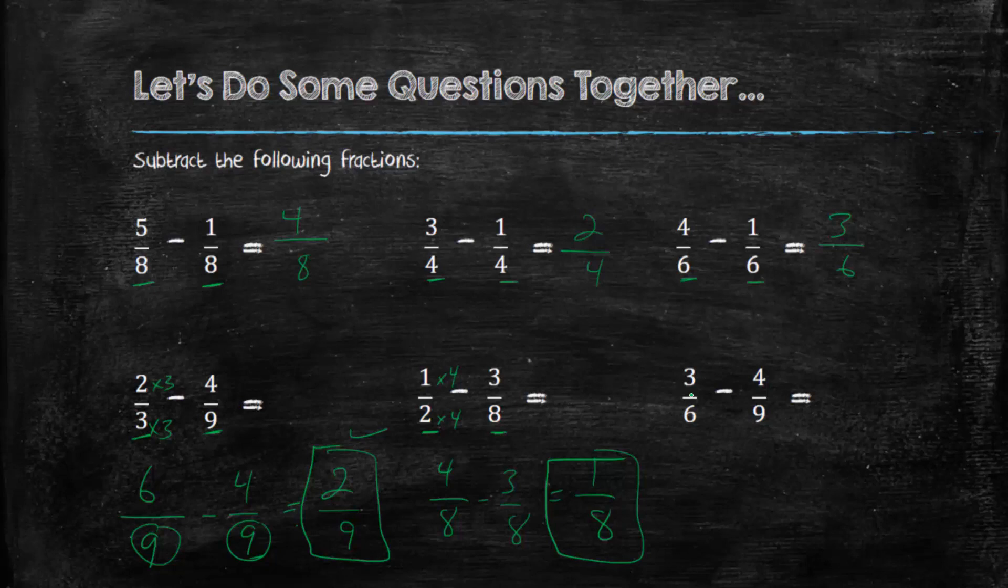Okay, our last question here. This is tricky. The denominators are not the same. We can't multiply 6 by a whole number to make it a 9. So we need to find a common multiple of 6 and 9.